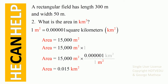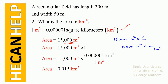Now the question is: what is our area in kilometers squared? How do we convert 15,000 square meters to kilometers squared? We take 15,000 meters squared and multiply by one, replacing one such that the meters squared cancels out. One meter squared is equal to 0.000001 kilometers squared. Meters squared cancels and you get your answer in kilometers squared.